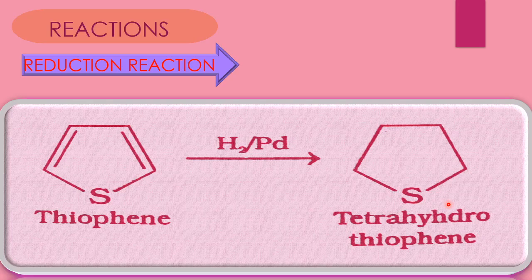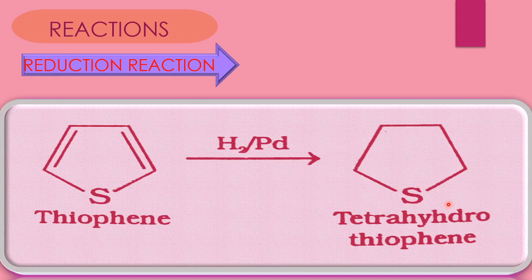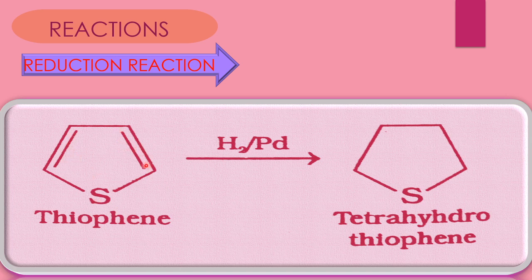The next point is reactions. The first reaction is the reduction reaction. Thiophene reacts with hydrogen in the presence of palladium catalyst. Addition of hydrogen to this thiophene ring forms tetrahydrothiophene. The 5-membered cyclic thiophene ring has carbon-carbon double bonds which are converted into carbon-carbon single bonds due to the addition of hydrogen. Addition of hydrogen means reduction reaction.